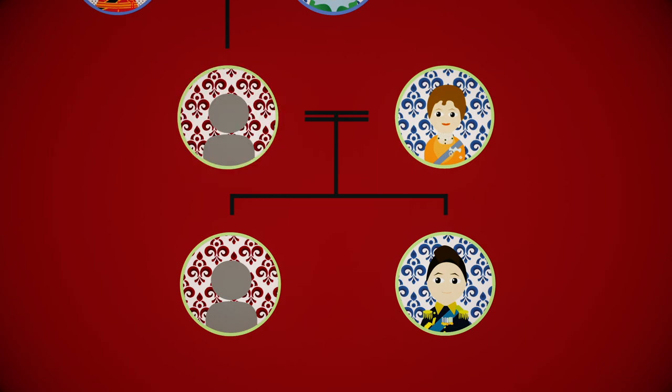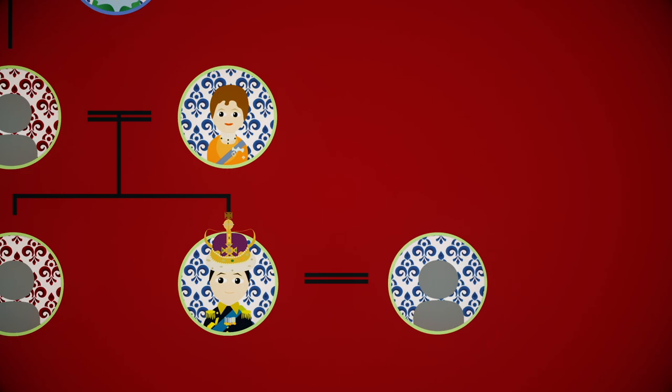When George died, his eldest son ascended the throne. But he wanted to marry an American. Absolutely not. So he had to denounce his titles. Edward's brother George VI became king. He ruled until his death in 1952.